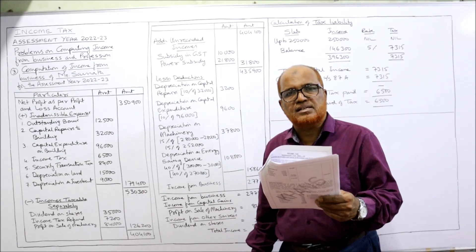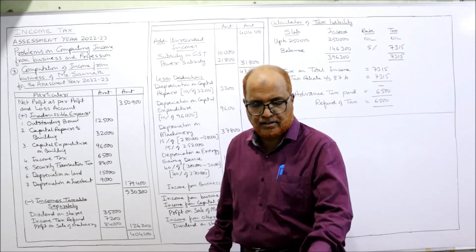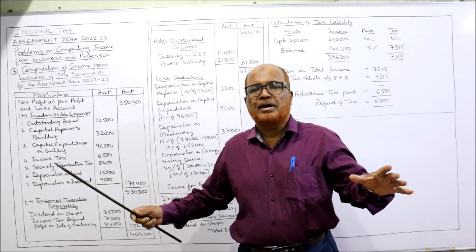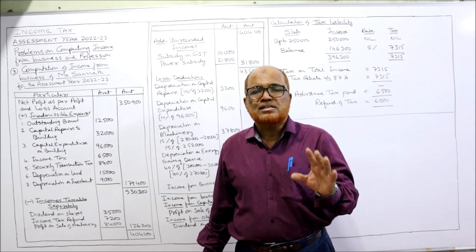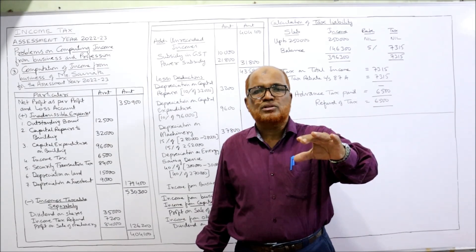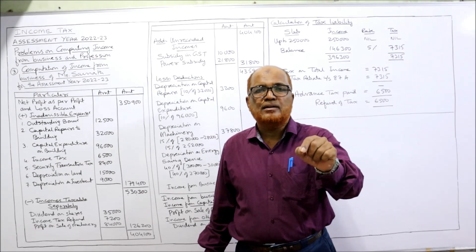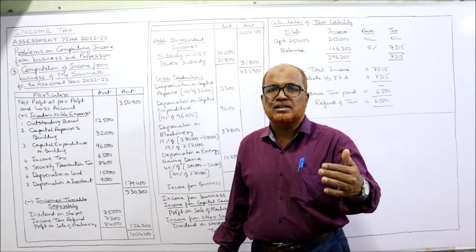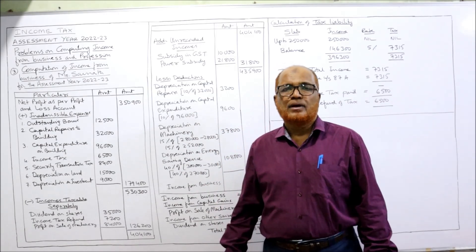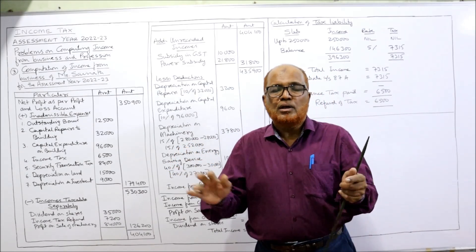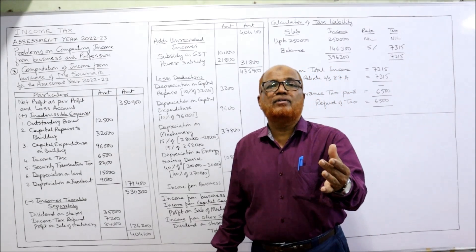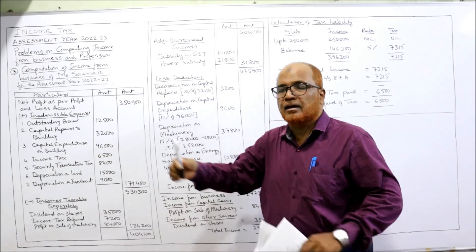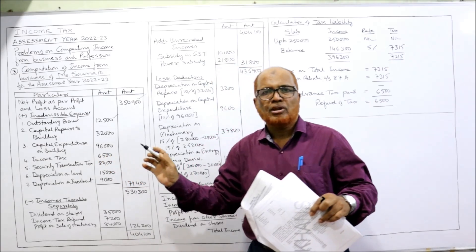Bonus ₹30,000 — add outstanding bonus ₹12,000. Even if the assessee follows the mercantile system of accounting, all expenses are allowed whether paid or not paid, but there are five exceptions. One exception is bonus paid to employees: if it is paid it will be allowed; if it is outstanding, not allowed. Even if not paid on the last day of the previous year, the assessee can pay before filing the return. If not paid even before filing the return, it will not be allowed. So outstanding bonus ₹12,000 is disallowed and added back.